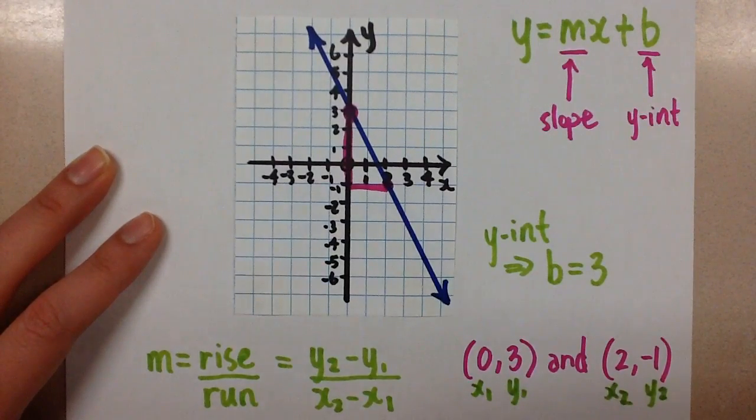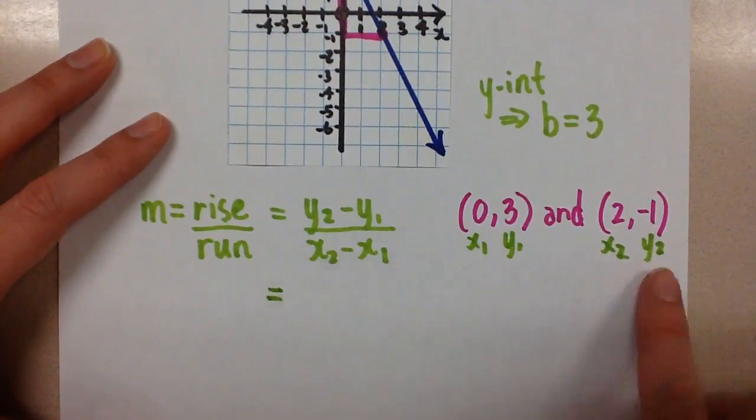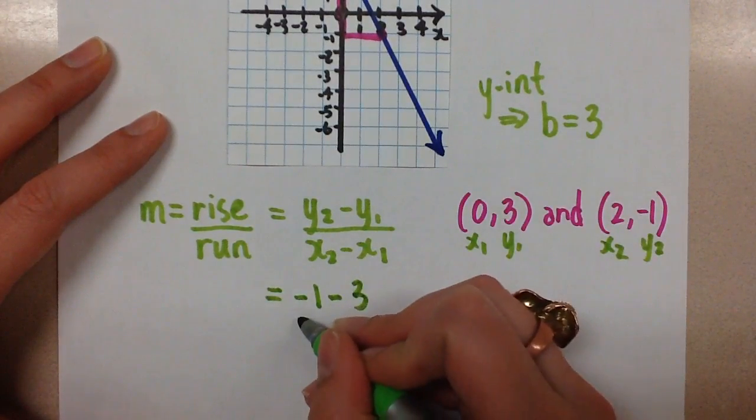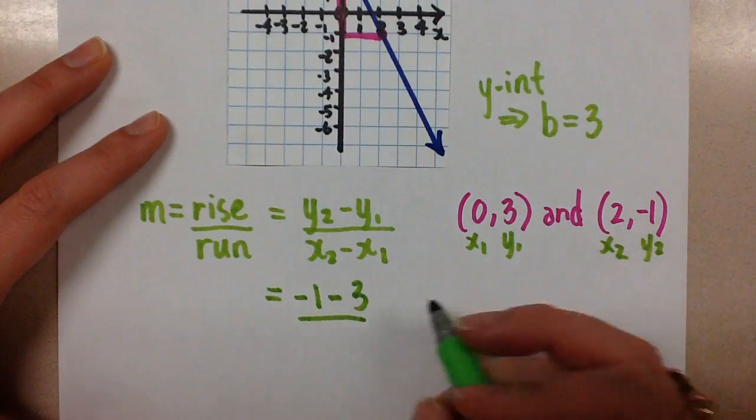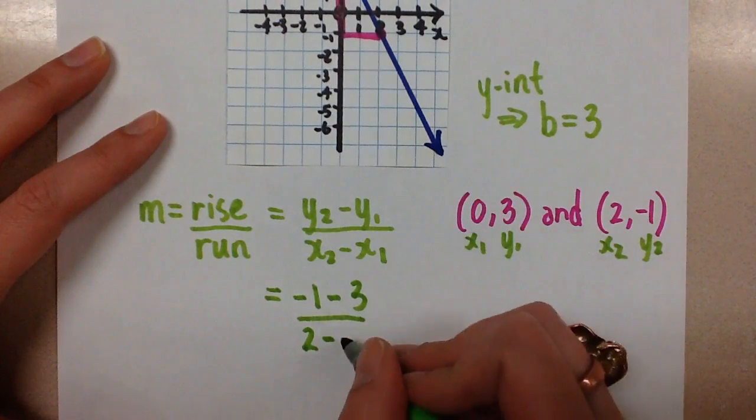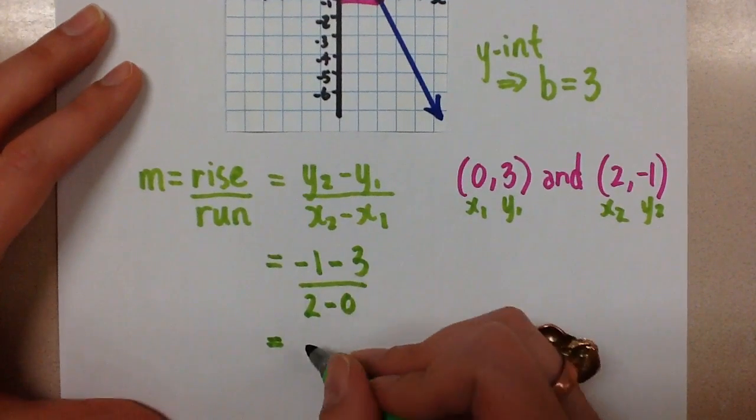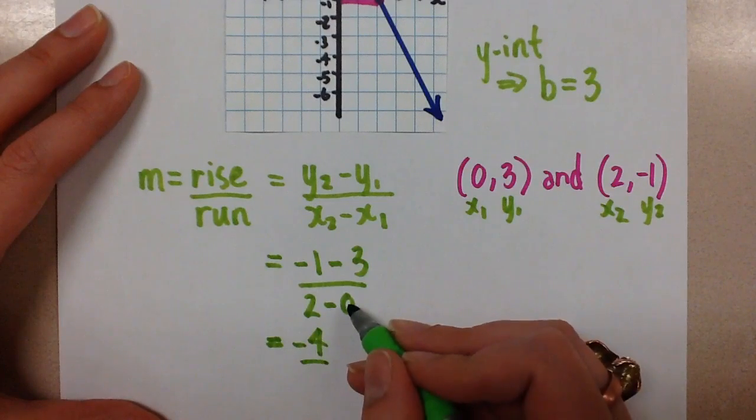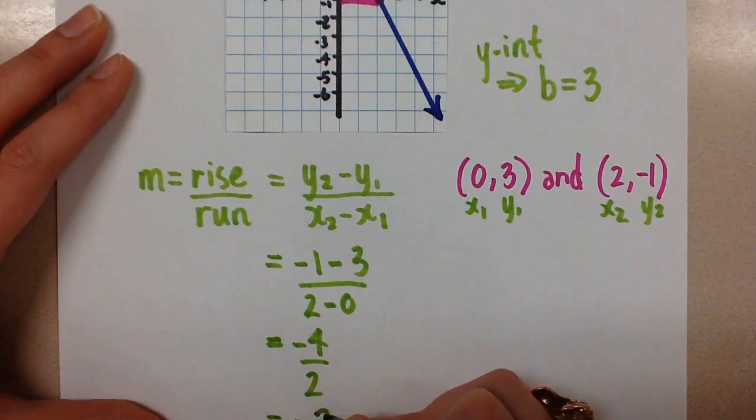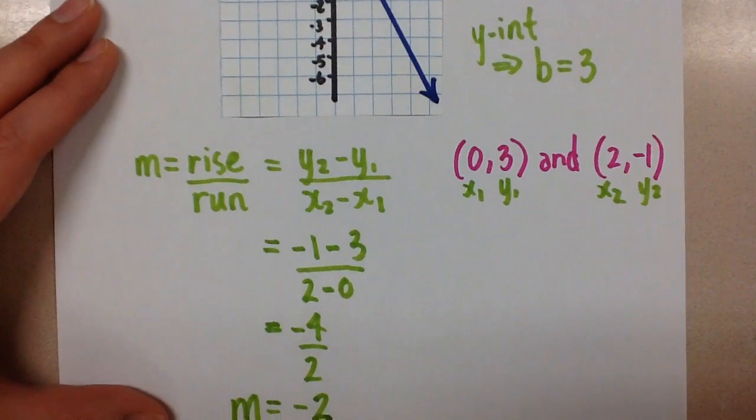So now we're going to go over here and sub in the values that we got. So y2 is negative 1, y1 is 3, over x2, which is positive 2, minus x1, which is 0. And this gives us negative 1 minus 3, which is negative 4, over 2 minus 0, which is 2, which is negative 2. And this is the slope of our line.